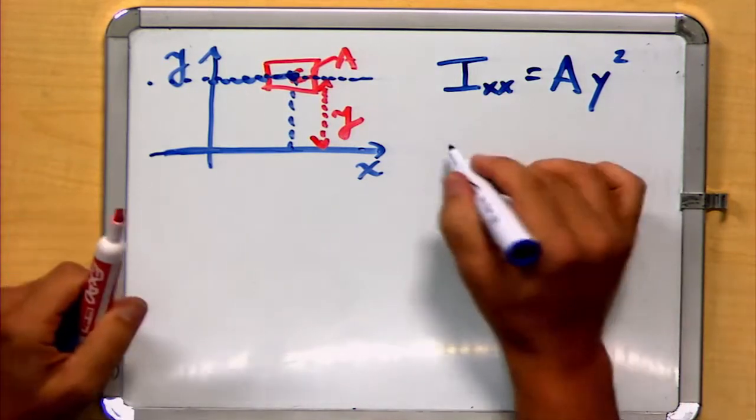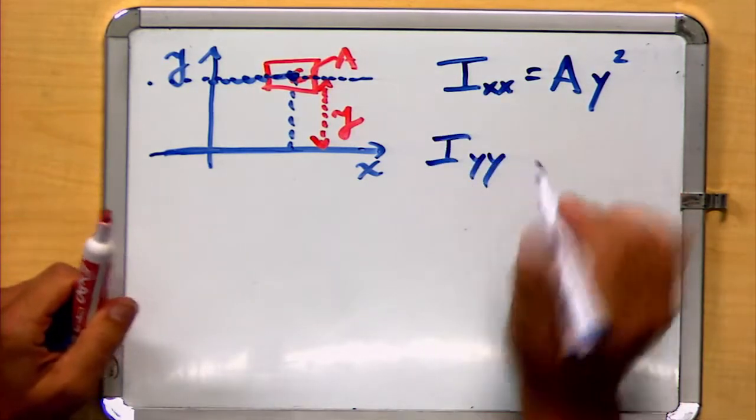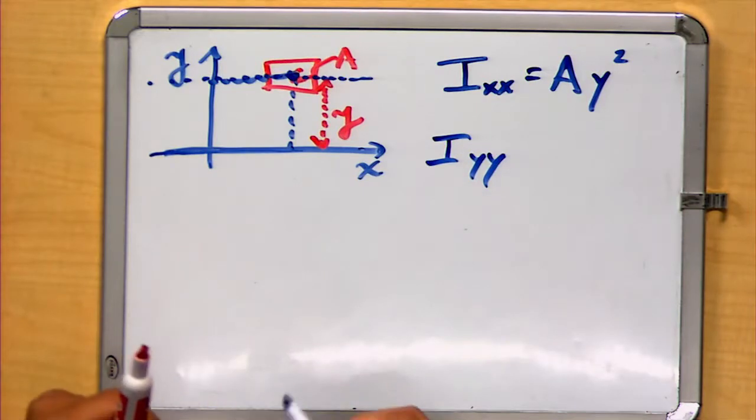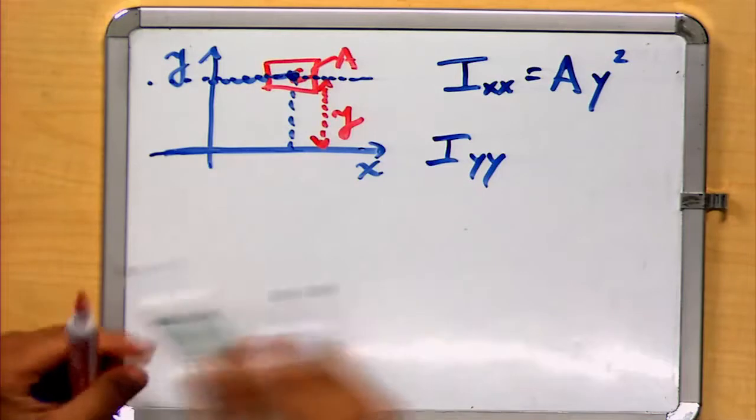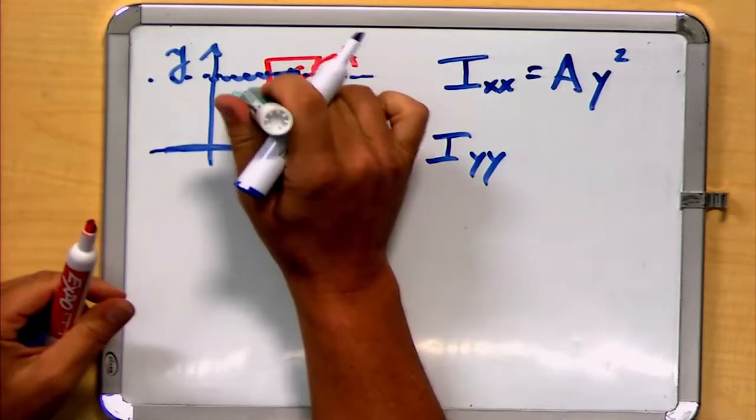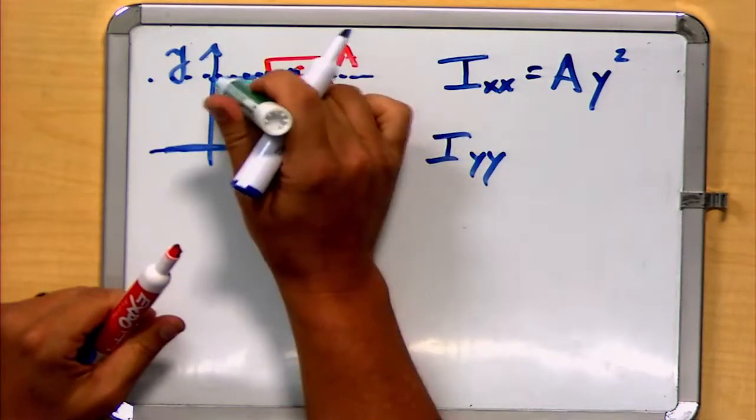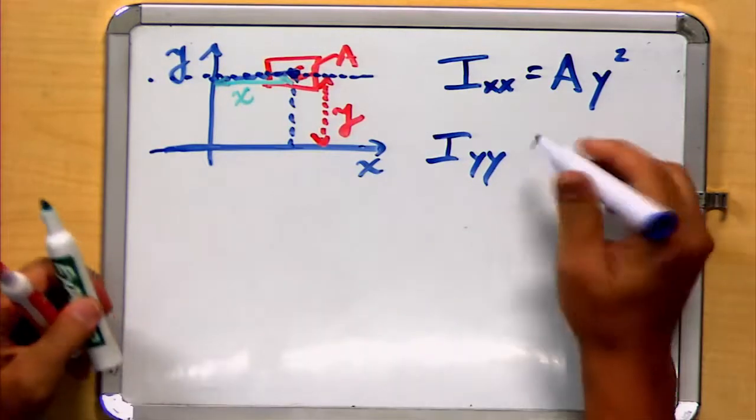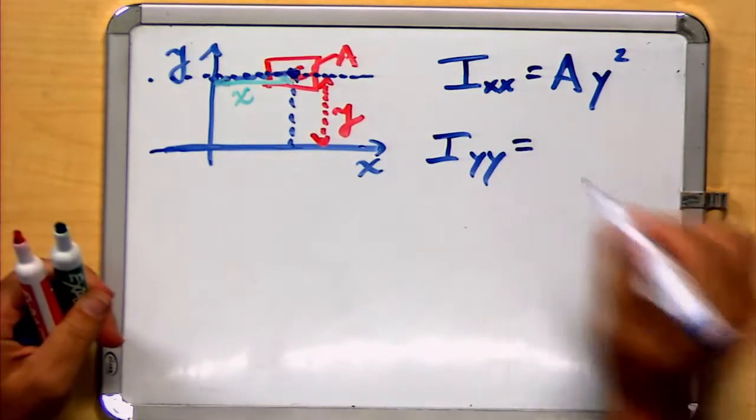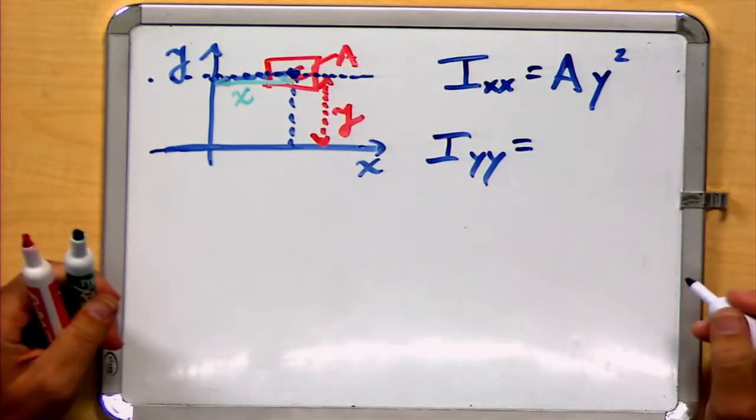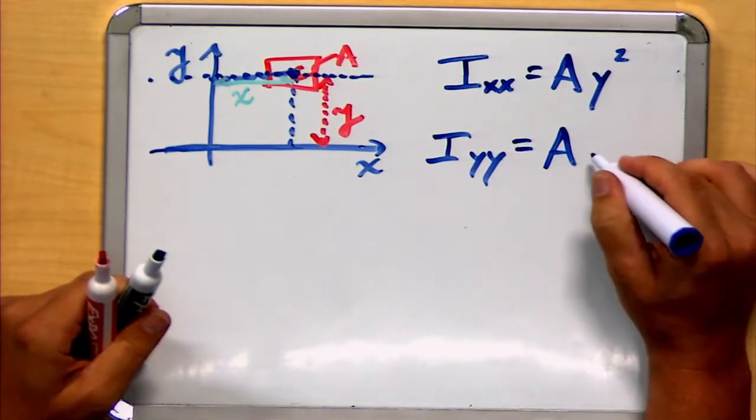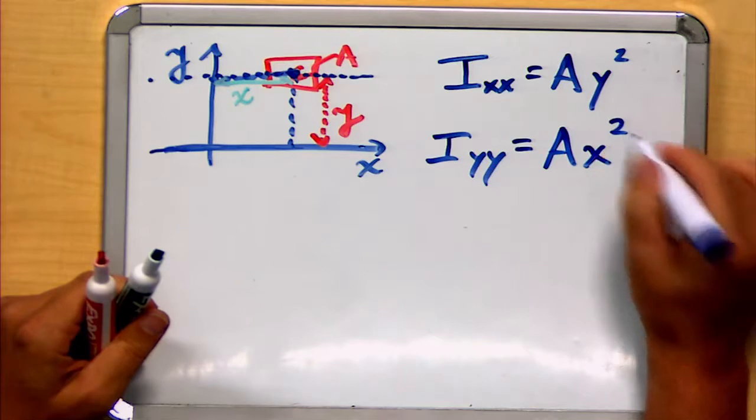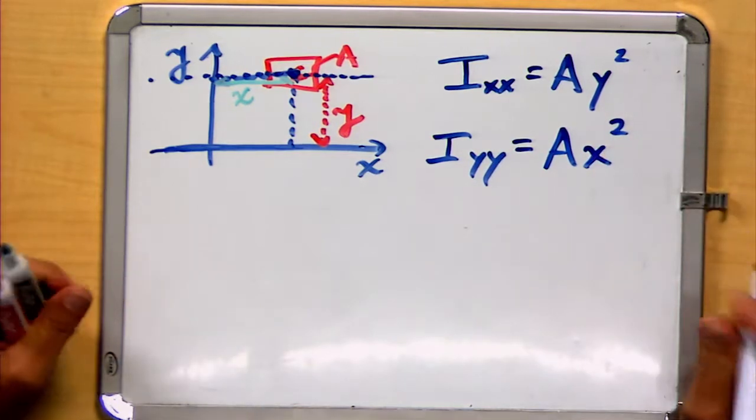We can also define Iyy, which is how much this is tending to resist a spin around the y-axis. And in that case, the distance we use would be the distance x, how far we are from the y-axis. So our moment of inertia around a vertical axis is going to be scaled by the area times the distance x from that vertical axis.